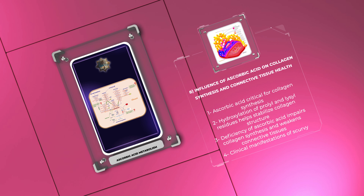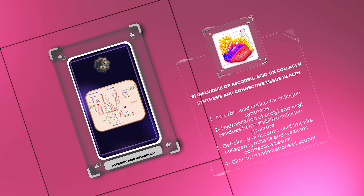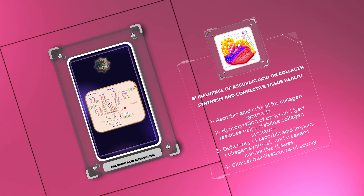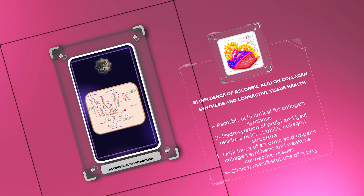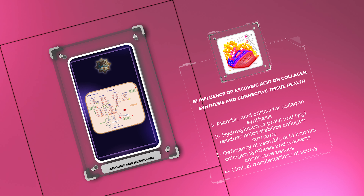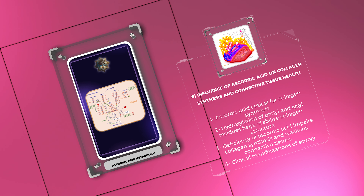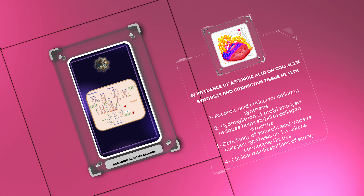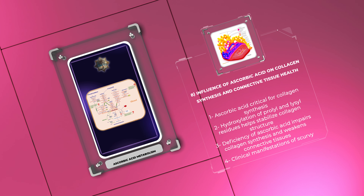Ascorbic acid plays a critical role in collagen synthesis, a process essential for maintaining connective tissue health. As a cofactor, ascorbic acid is involved in the hydroxylation of prolyl and lysyl residues within collagen precursor molecules, helping stabilize the triple helical structure of collagen. This stabilization is crucial for the strength and integrity of connective tissues such as skin, blood vessels, tendons, and bones.